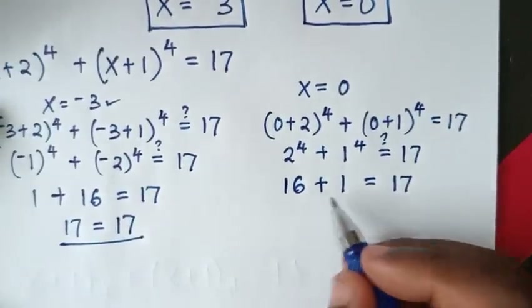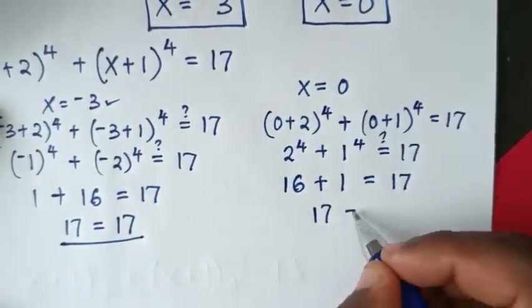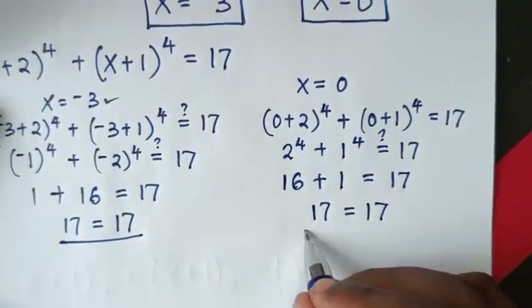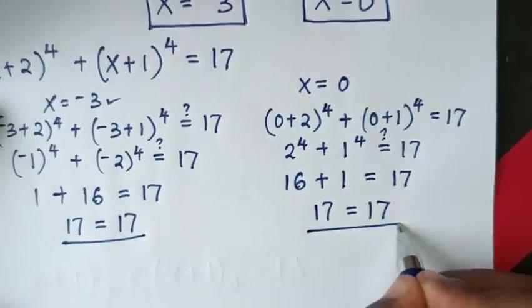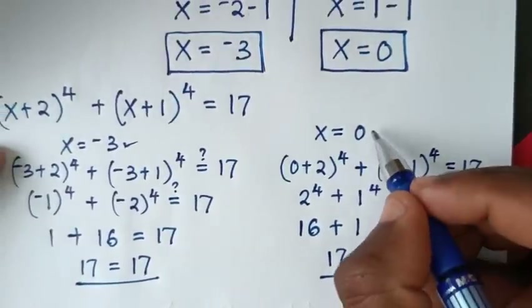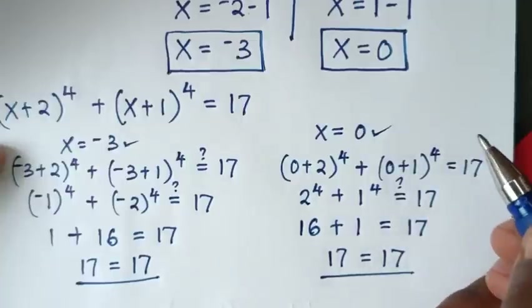Then 16 + 1 = 17 = 17. Left side and right side are equal. It is also true for the value of x = 0.